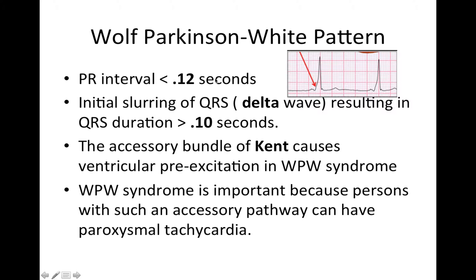In Wolff-Parkinson-White pattern, the PR interval is less than 0.12 seconds. The initial slurring of the QRS — that little hump — is the delta wave, which results in a QRS duration of greater than 0.10 seconds.